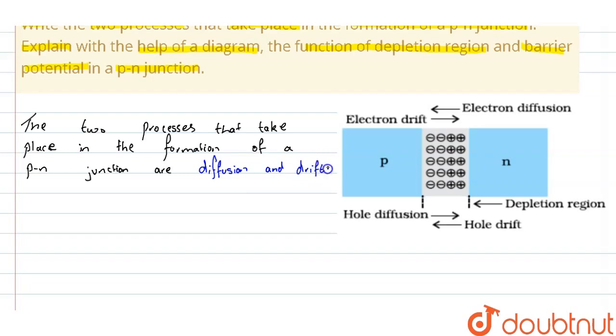For the next part of the question, we have to explain with the help of a diagram the function of depletion region and barrier potential. In an N-type semiconductor, the concentration of electrons, the number of electrons per unit volume, is more compared to the concentration of holes. Similarly, in a P-type semiconductor, the concentration of holes is more than the concentration of electrons.